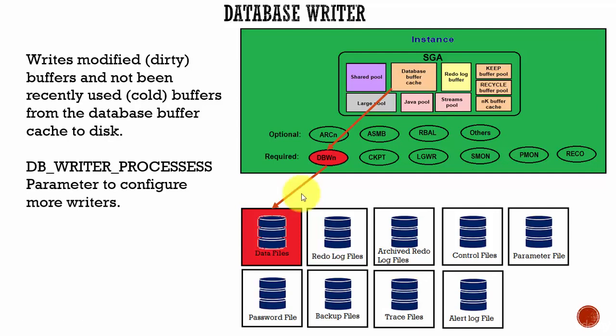There is a least recently used algorithm which helps this database writer process. This least recently used algorithm identifies which blocks are frequently used and which blocks are not frequently used. The database writer writes all the blocks which are not frequently used or not recently used, and keeps all the blocks which are frequently used in the database buffer cache. By doing this, the overall performance of the database is improved.